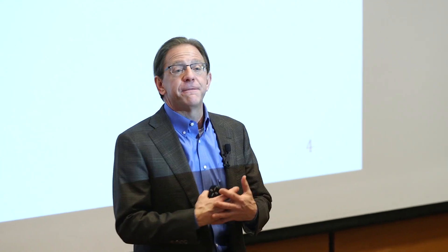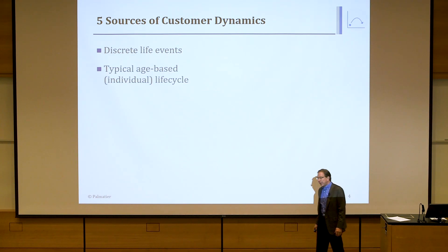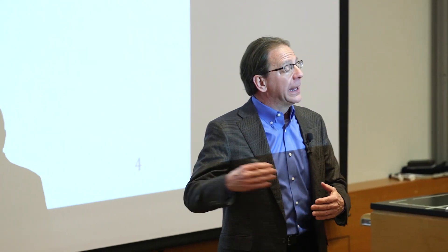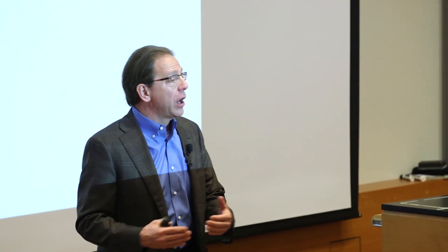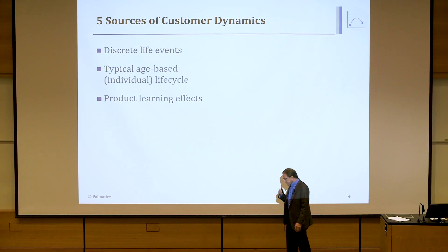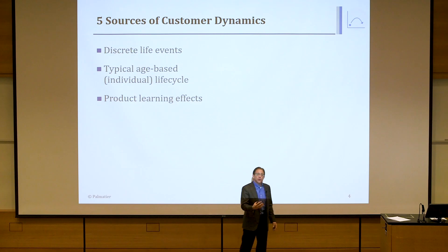Let's say you have triplets — three kids in one day — your life fundamentally changes. It probably changes your car, your financial situation, maybe even the type of house you need. Then there are changes that happen more generally as you age. As an individual gets older, they might start perceiving that their life will end at some point and become interested in products like retirement, funeral services, and estate planning.